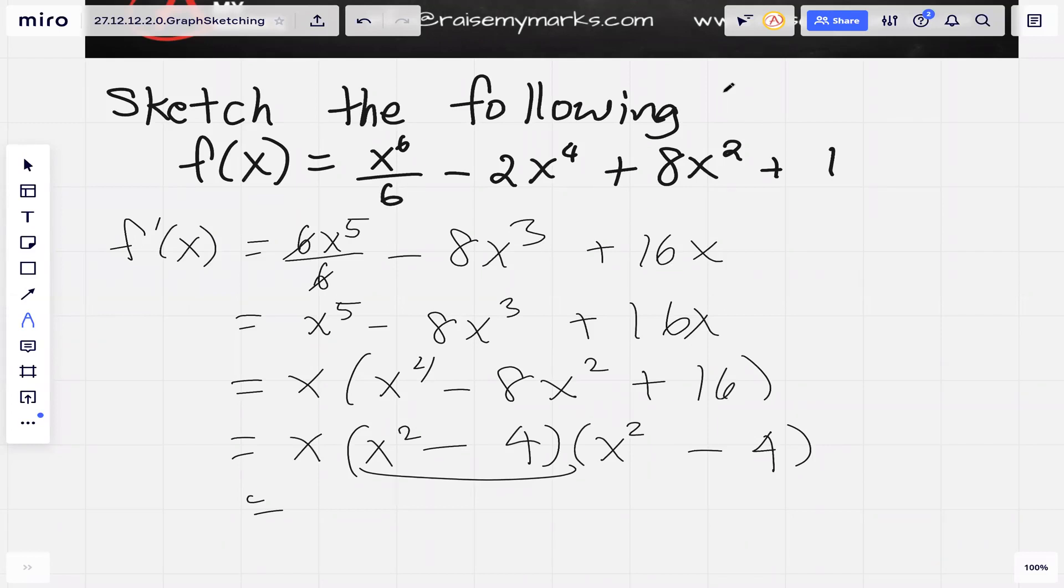The fourth degree polynomial is a perfect square. So we actually have x times (x minus 2) times (x plus 2) all squared.